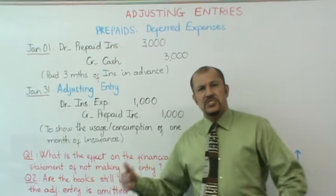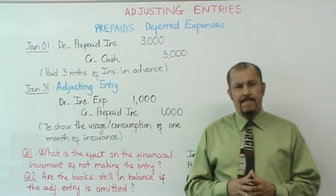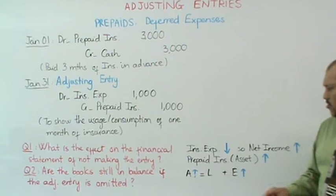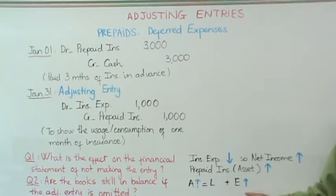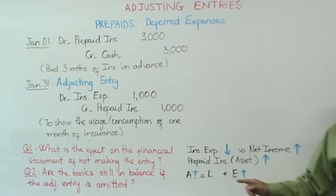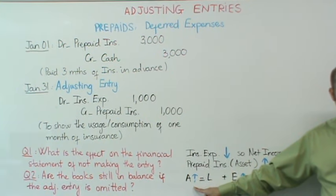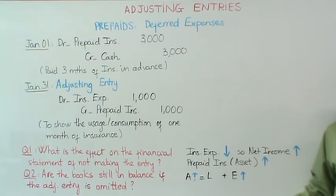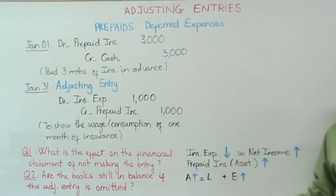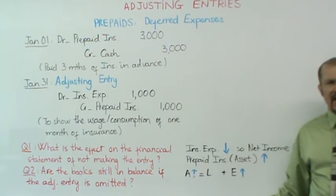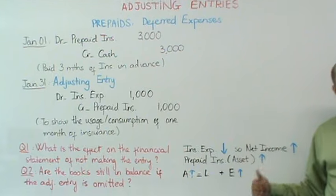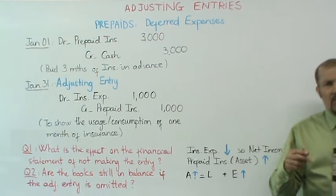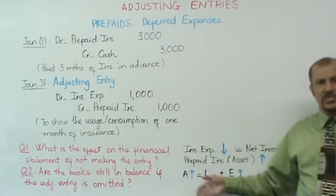Are the books still in balance if you did not make this adjusting entry? The answer is a resounding yes. Look at the accounting equation: assets equals liabilities plus equity. Your assets will be overstated — left side is overstated. There's no effect on liabilities. But your equity is also overstated due to net income being overstated. So both sides are overstated by the same amount. Your books are incorrect but still in balance. This is where you have to be careful in accounting — you can be in balance but still wrong.